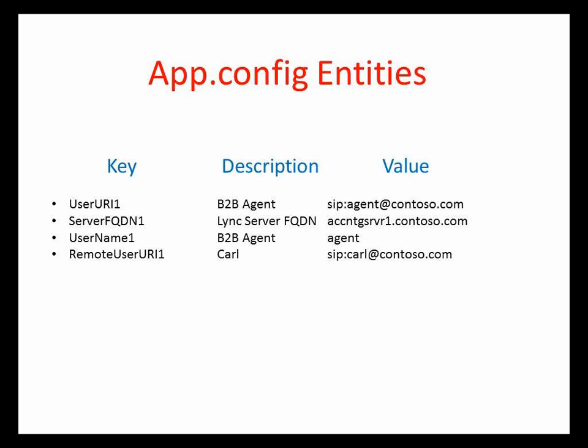I added four keys to the app.config file. UserURI1 is the Lync client sign-in address on the application computer — that's our agent application. ServerFQDN1 simply points to your Lync server computer. UserName1 is the username from UserURI1. And RemoteUserURI1 is Carl, our customer support technician. Note that Bob, the customer on the inbound call, doesn't get a key because we don't know who he is — the application is designed to take a call from anybody.